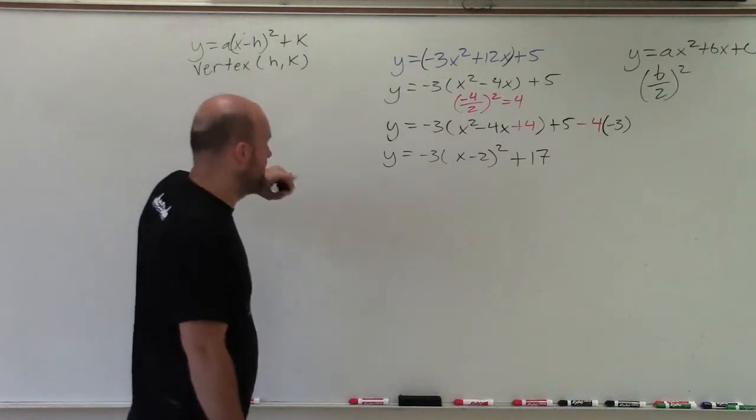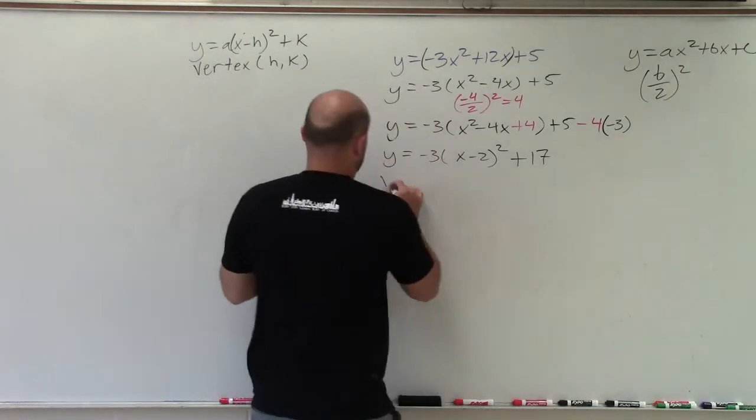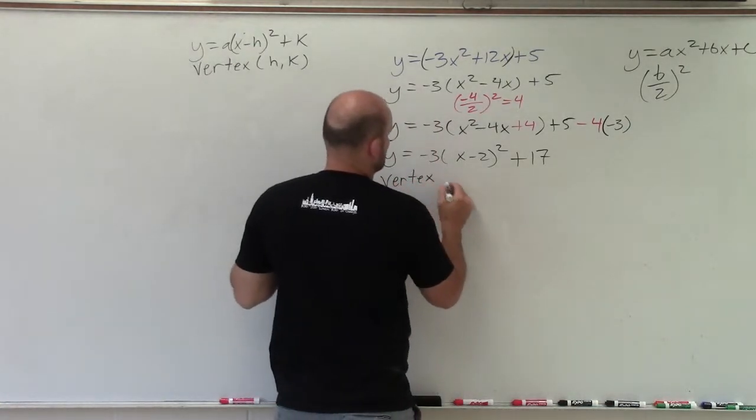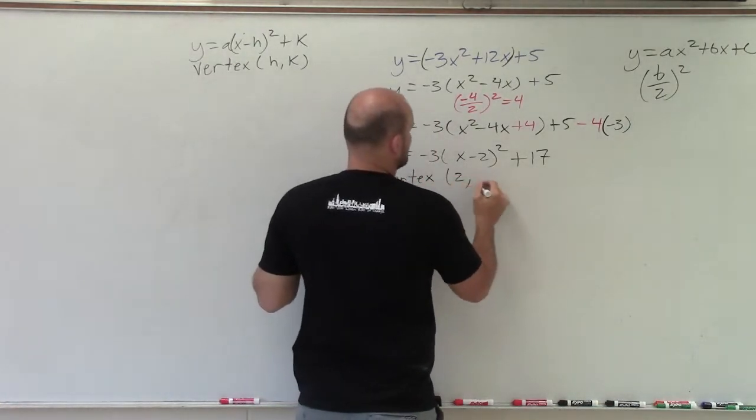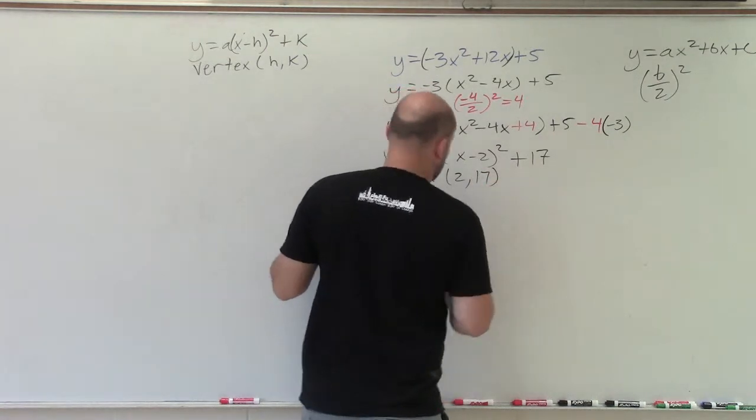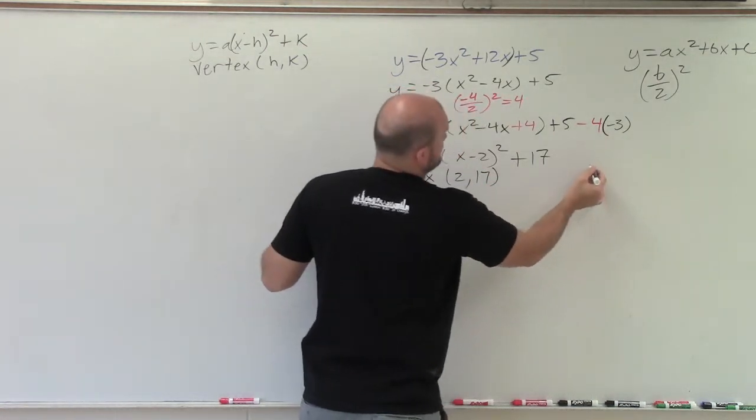Now, we know that the vertex is at h, k. So let's go ahead and write our new vertex. My new vertex is going to be at 2, 17. So let's go ahead and plot that somewhere.